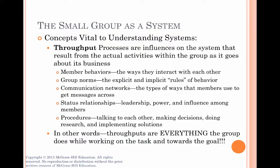Throughputs are what actually happens within the group as it works toward the goal. That includes the member behaviors — the ways that they interact with each other. The group norms, which are the explicit and implicit rules of behavior: explicit meaning they're written down and talked about, and implicit means it's just something you do as a group without talking about it. Communication networks — the types of ways that members use to get their messages across to each other. The status relationships within the group, leadership, power, and influence among the members. And procedures — how do you get things done? Talking to each other, making decisions, doing research, implementing solutions. In other words, throughputs are everything the group does while working on the task and towards the goal.